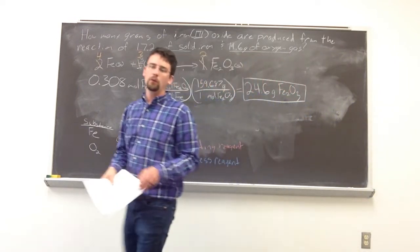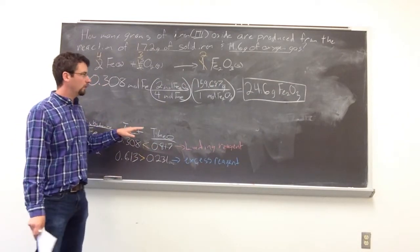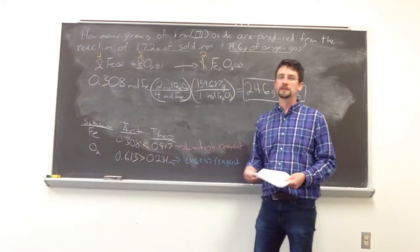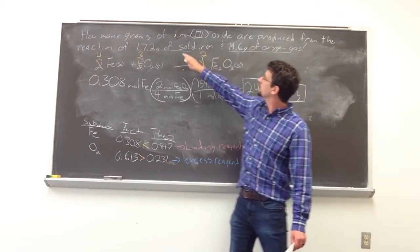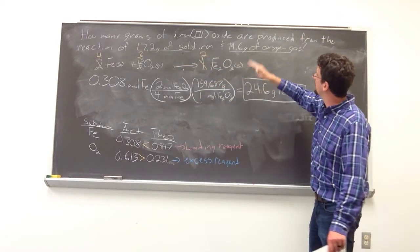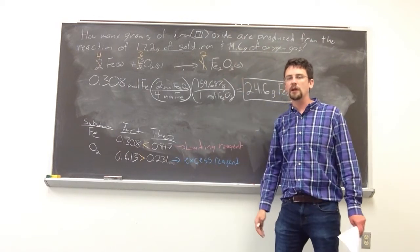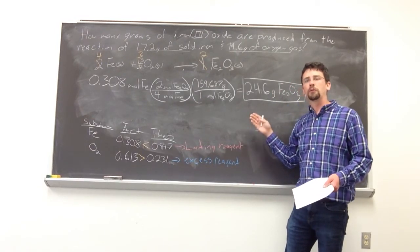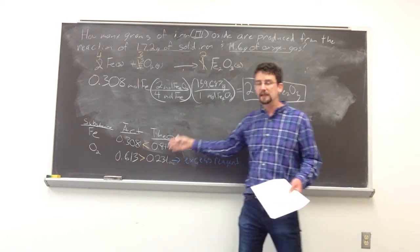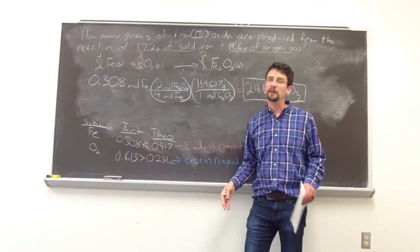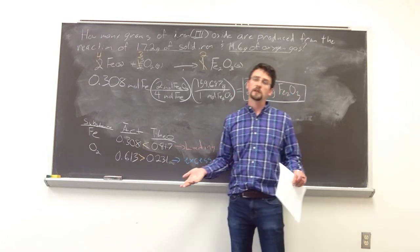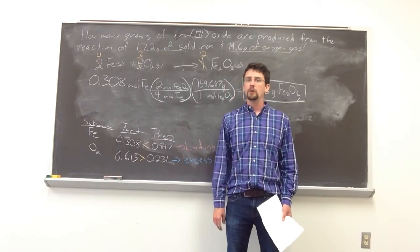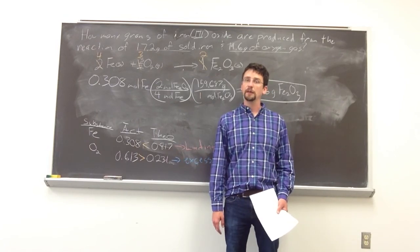We've looked at how to diagnose a limiting reagent and predict product amounts. An alternative method is to convert the grams of each reactant directly to grams of iron oxide and see which gives the least product. I prefer this method because it gives more practice and if you're asked about excess reagents, the numbers are already calculated. Use whatever method works best. Thanks for watching — please leave any comments below.